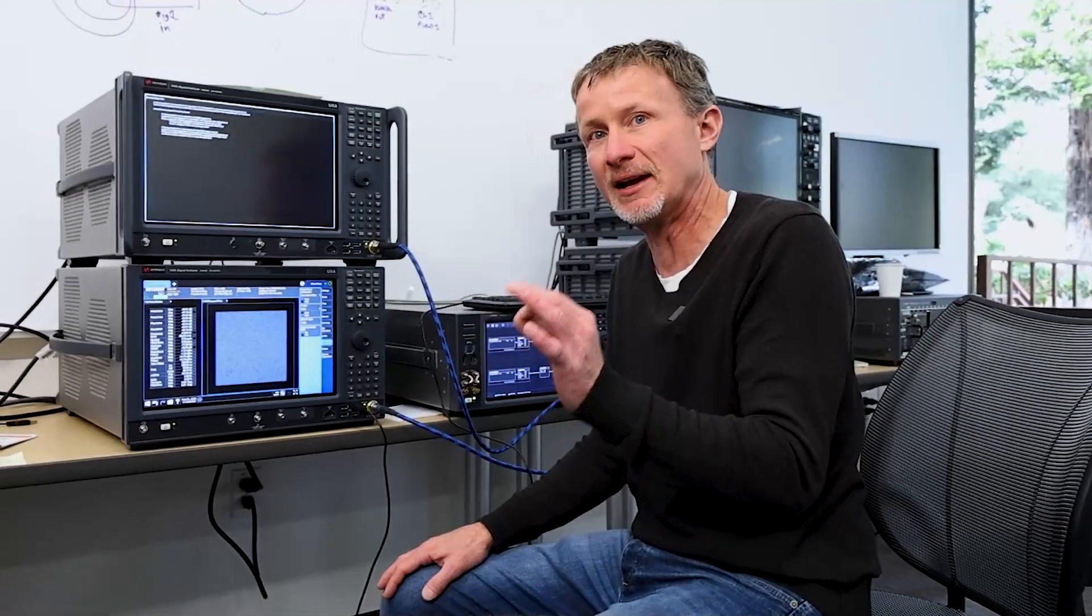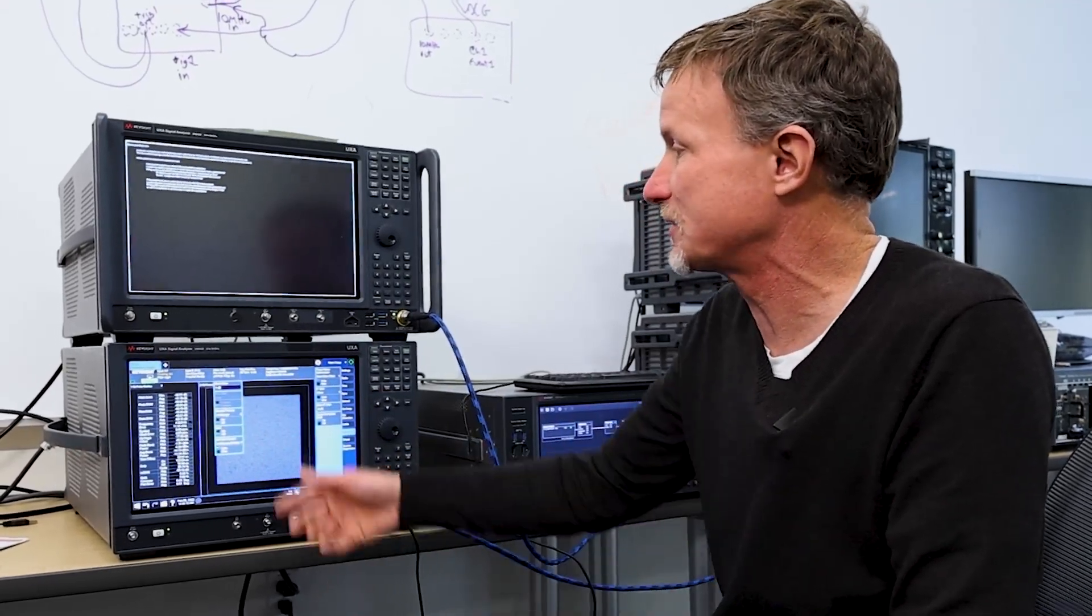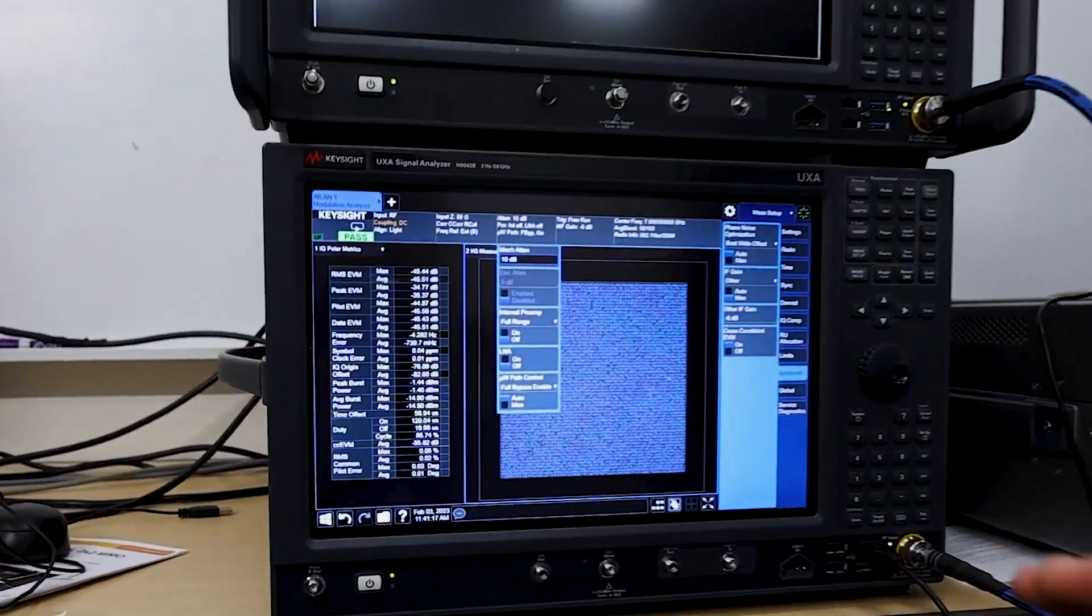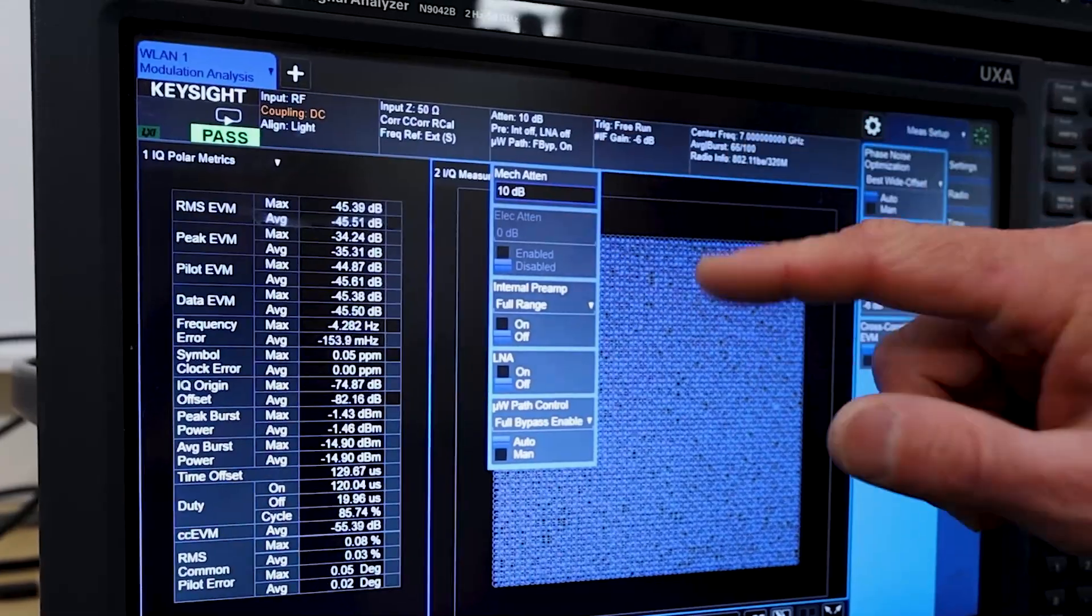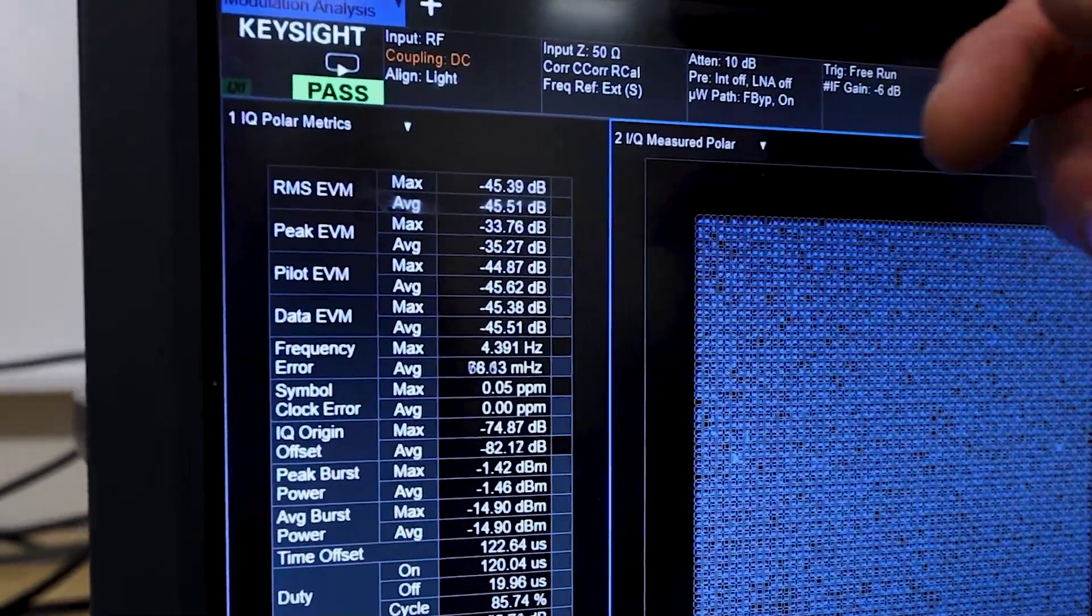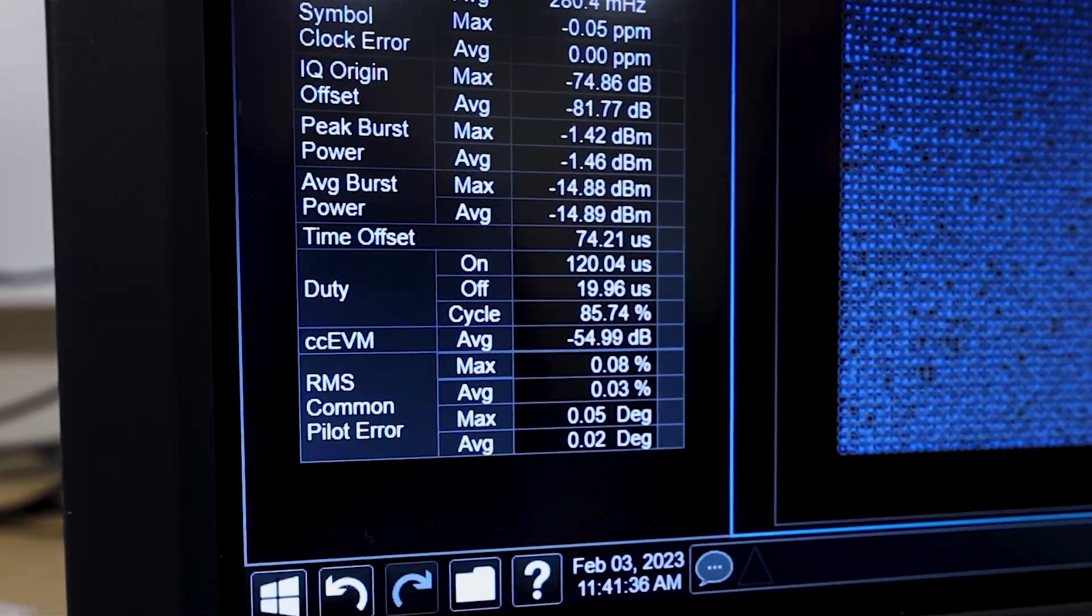Now one thing you can do to improve the cross-correlation EVM a little bit is to make sure you're more noise dominated in the receiver. Normally with a single channel EVM measurement you're trying to find the best compromise between noise and distortion by adjusting that front end attenuator. That's how we have the analyzer set right now. But if we increase the attenuation from 4 dB to 10 dB, we're going to be more noise dominated. The idea here is to eliminate any distortion components as much as possible. So we've increased the attenuation to 10 dB. That made our single channel EVM degrade slightly from minus 49 down to minus 45. But you'll notice the cross-correlation EVM also improved. Now we're down to around minus 55 dB.